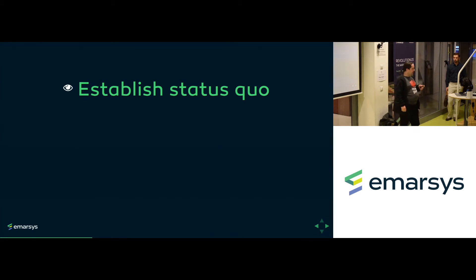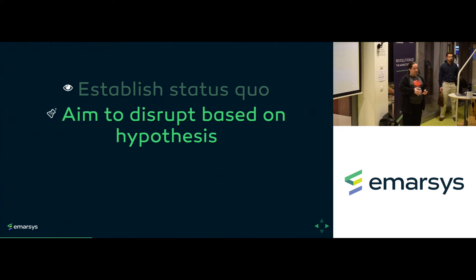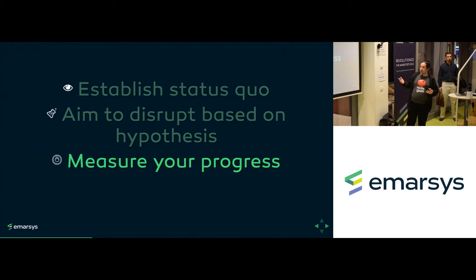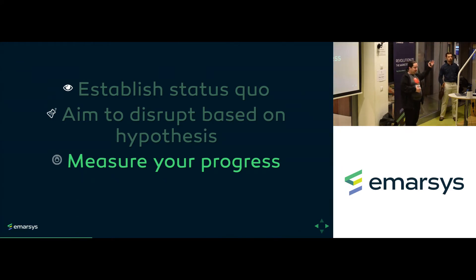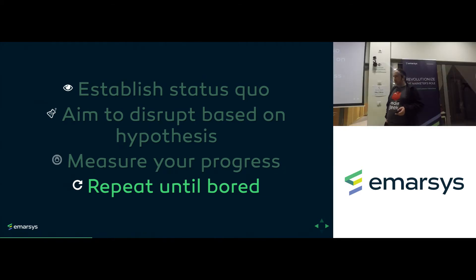Here's the pattern: first we establish the status quo — we find out our current situation. Then we aim to disrupt that status quo — we do something that will tell us if our image of the world is correct or not. Then we measure our progress — did we change our perception, or find something incorrect? And then we just repeat that.